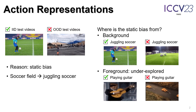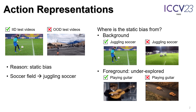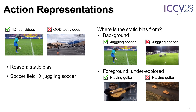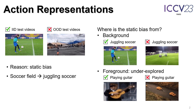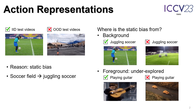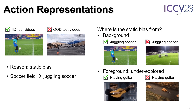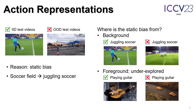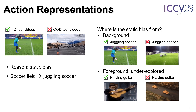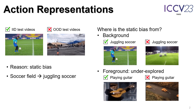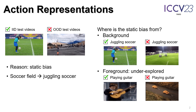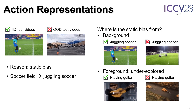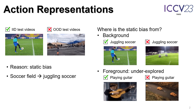Action representations are learned by a deep neural network with pairs of video and action labels. The representations work well on IID videos but fail to generalize to OOD videos. The reason for the failure is static bias of representations.